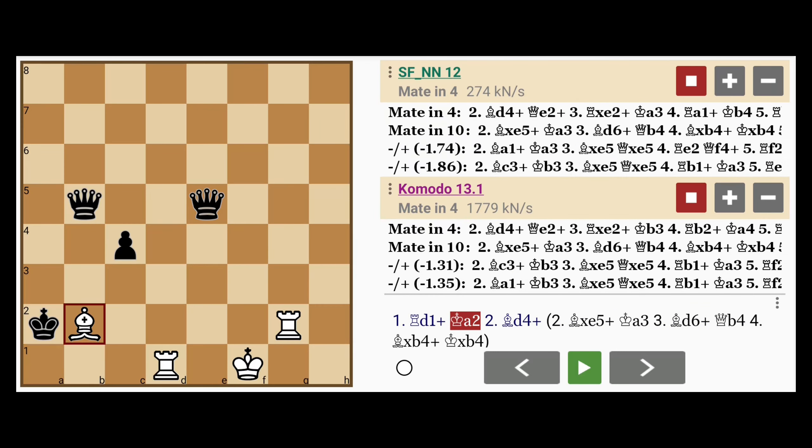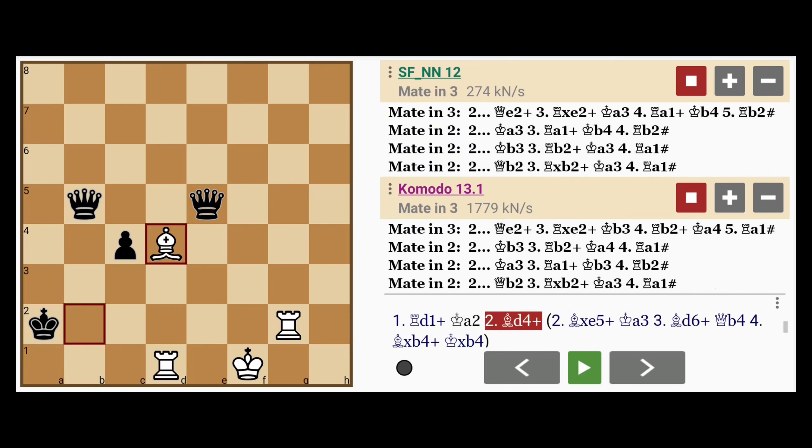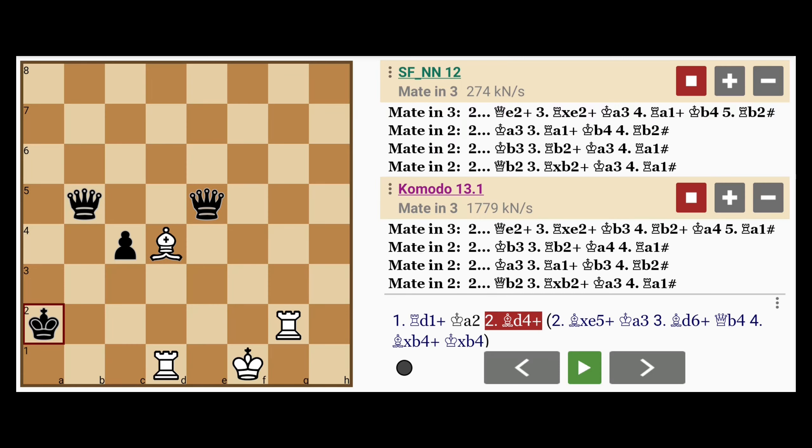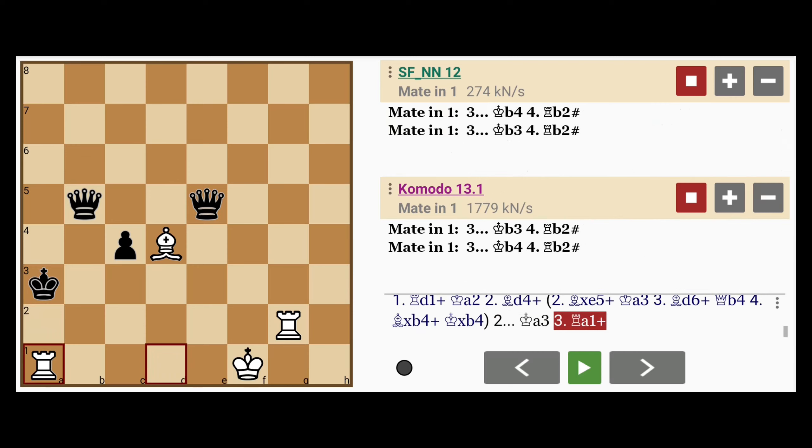So one step short of capturing the queen, but creating a discovered check on the king nonetheless. And now here, if king to a3, rook to a1 check.